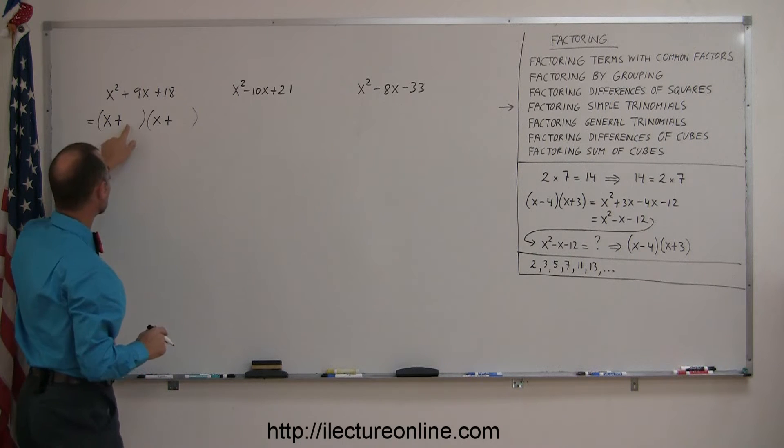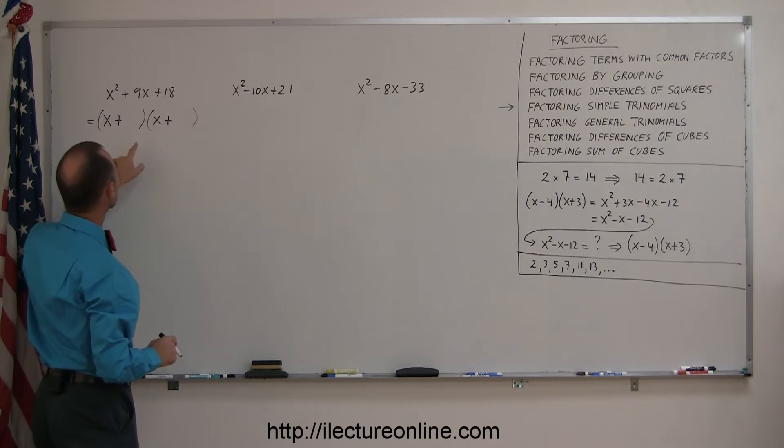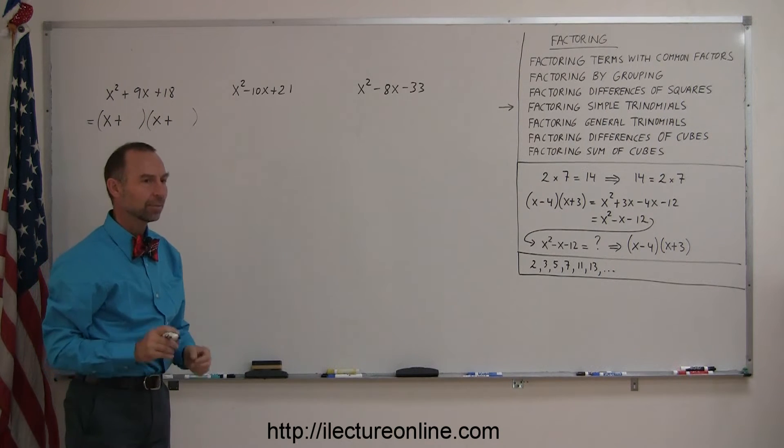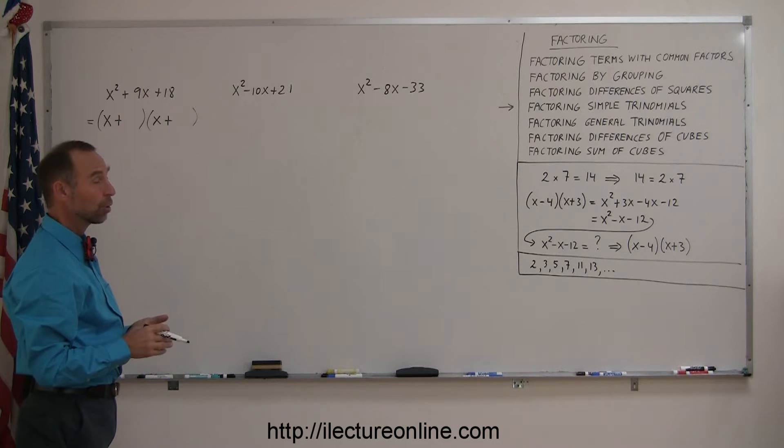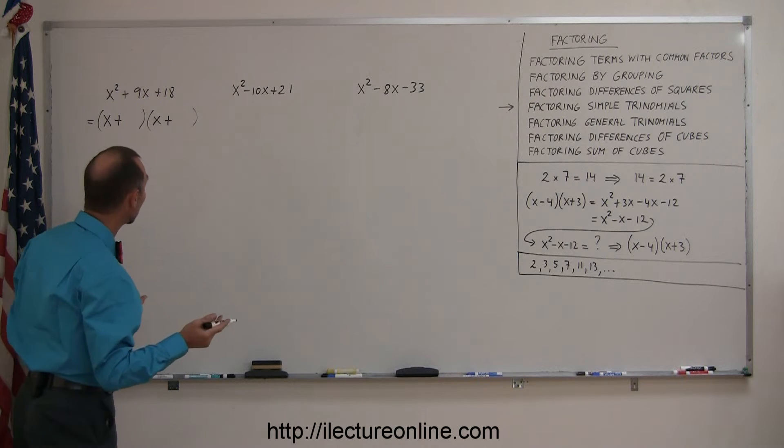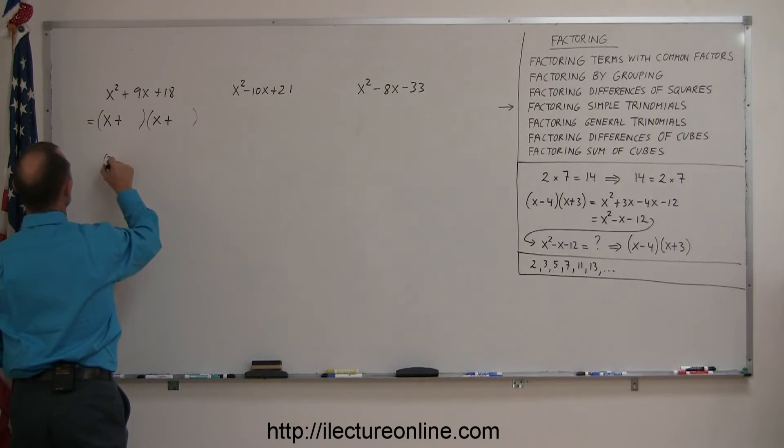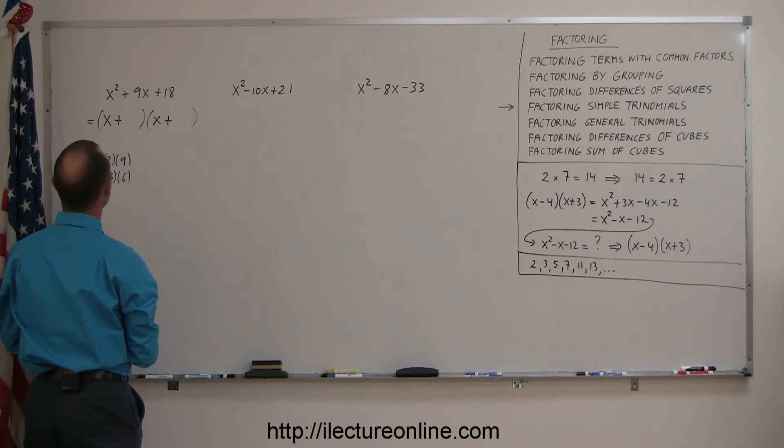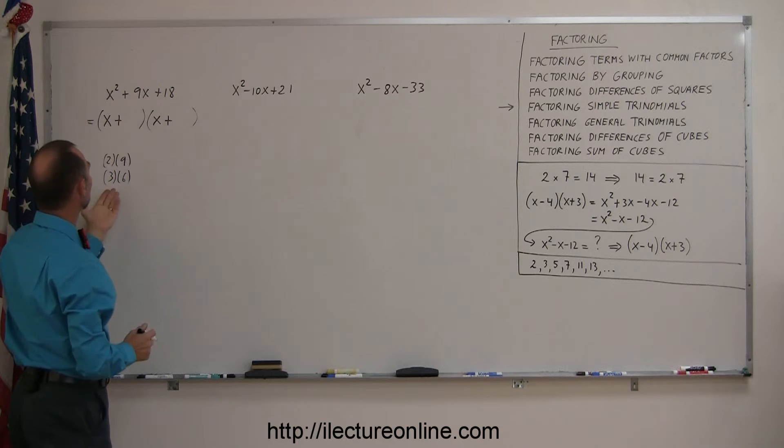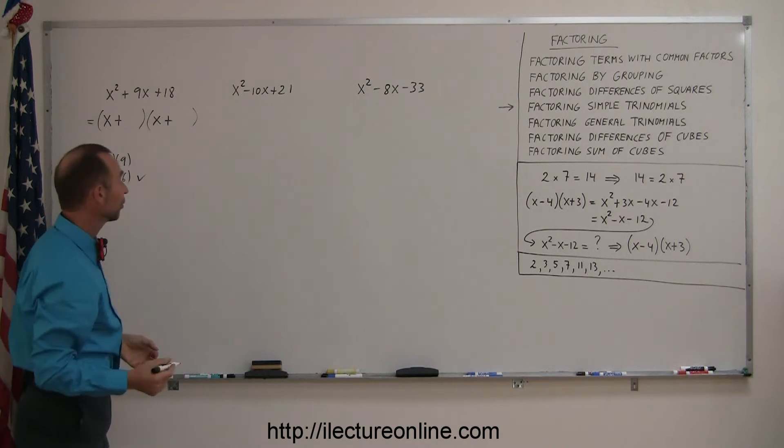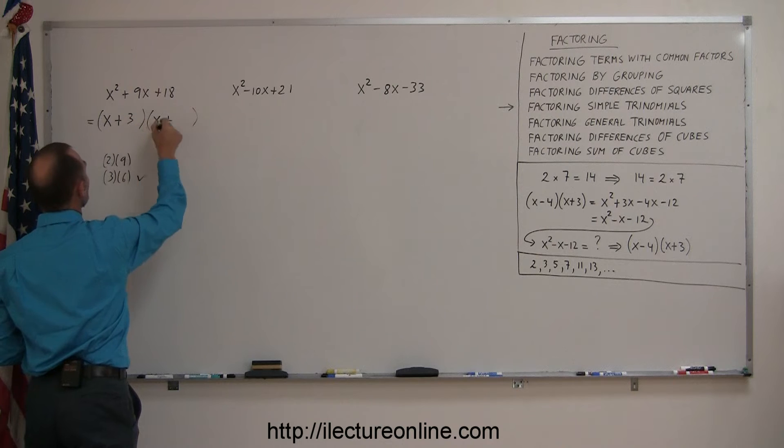Now, to come up with the last two numbers here and here, I know that the product has to equal 18, and the sum has to equal 9. So I'm looking for two numbers that add up to 9, and when I multiply them together, I have 18. I can start with 2 times 9, that's 18. 3 times 6, that's 18. It either has to be 2 times 9 or 3 times 6, but they have to add up to 9, and the only two that add up to 9 is these two. So the only solution I can have is a 3 and a 6.